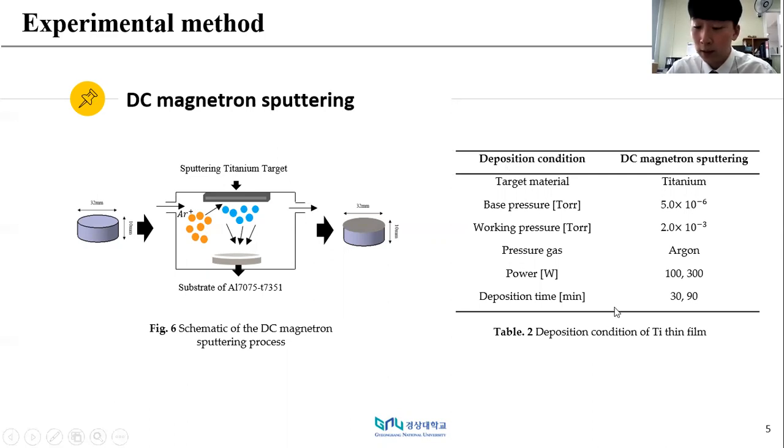Table 2 shows during the deposition working pressure was set to 2 times 10 to the power of minus 6 torr. Process gas was argon. DC power was 100 Watt and 300 Watt and deposition time was 30 minutes and 90 minutes and detailed deposition conditions were shown in Table 2.